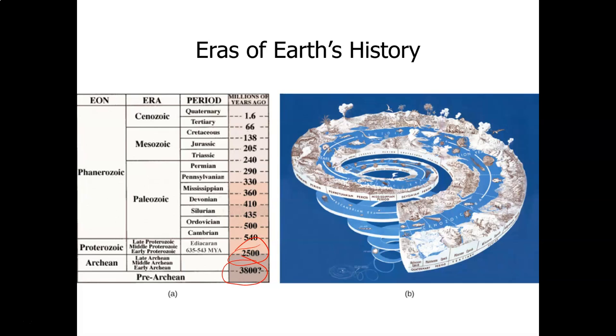That moved up to the Ordovician, the Silurian, the Devonian, the Mississippian, the Pennsylvanian, and the Permian. And then we went into the Mesozoic Era, which you've probably heard these terms: Triassic, Jurassic, and Cretaceous.